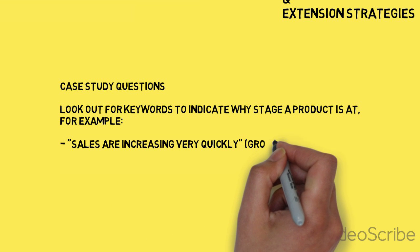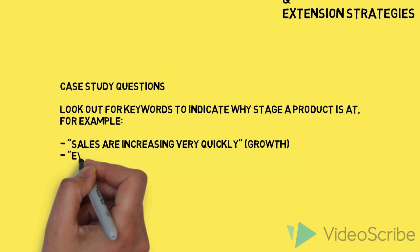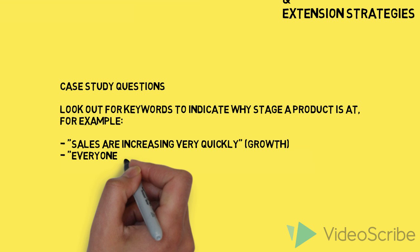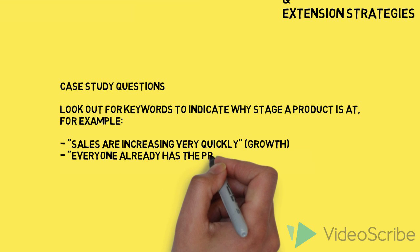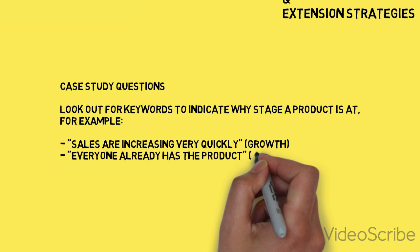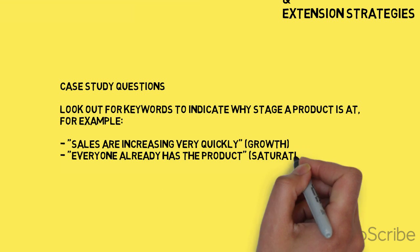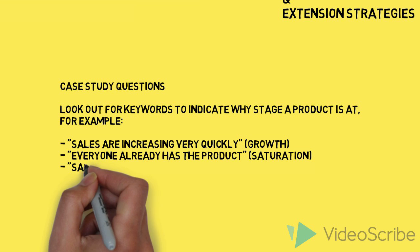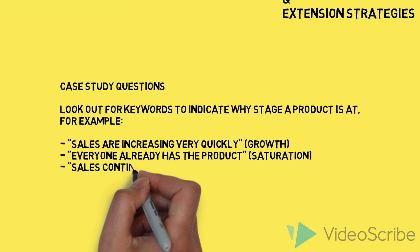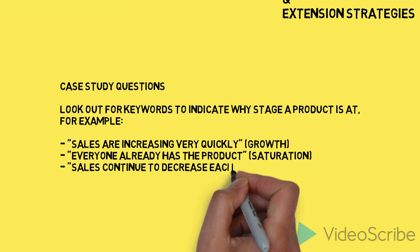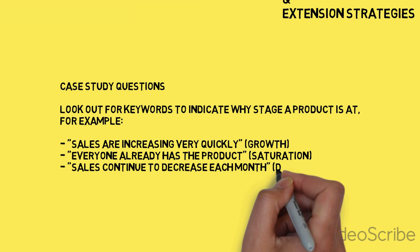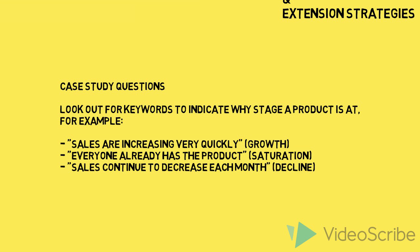For example, the phrase 'sales are increasing very quickly' would show you you're in the Growth stage. 'Everyone already has the product' suggests Saturation, and any mention of sales decreasing would point to the Decline stage.